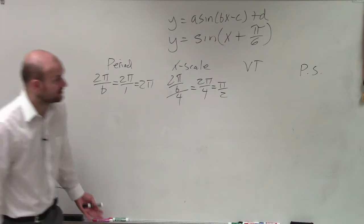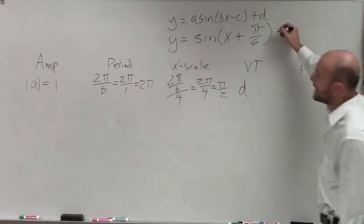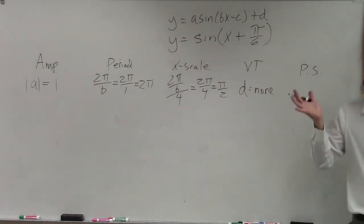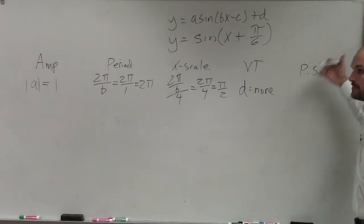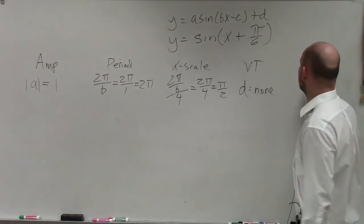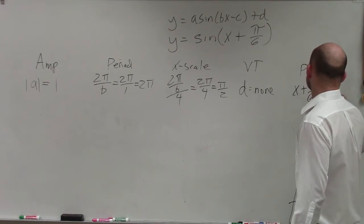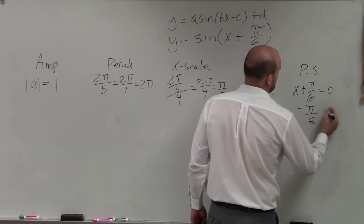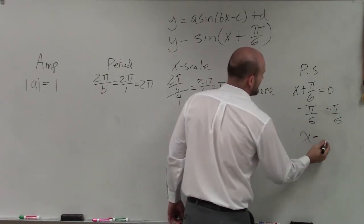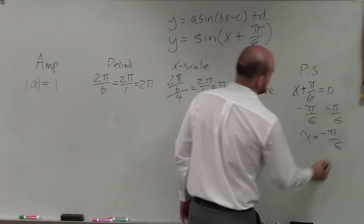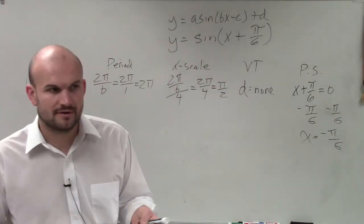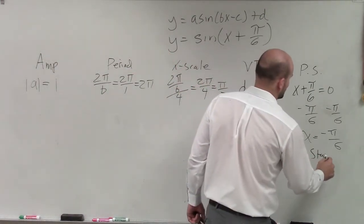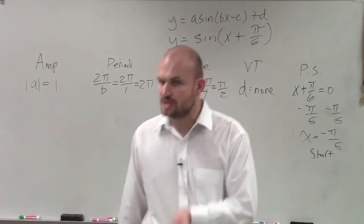My vertical transformation, that's just going to be my value of d. Well, I'm not adding or subtracting outside my function. So that's just going to equal none. I'm not going to be shifting my graph up or down at all. And then I have my phase shift. Now, remember the phase shift, we always take whatever's inside of our function and we set it equal to 0. Then we solve for x. So therefore, you guys can see that x equals negative pi over 6. So what I'm going to do is I'm going to shift my graph pi over 6 to the left. This is also going to be where we're going to want to start what the graph is going to look like. That's where we're going to be starting everything.